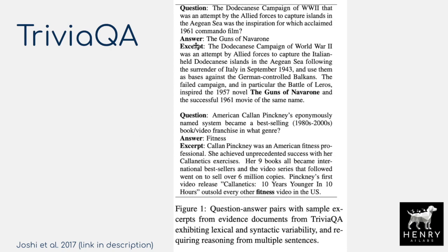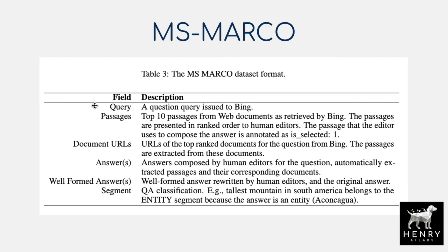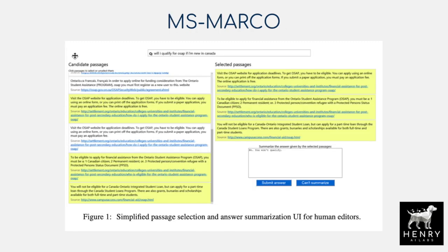In the TriviaQA dataset, you similarly have questions requiring knowledge-intensive factual information to generate answers. The MS-MARCO dataset is particularly interesting — it has queries issued to Bing written in natural language, with the top 10 passages returned and human-annotated best answers. This represents another knowledge-intensive task: answering any search engine query using this Wikipedia corpus non-parametric memory, the neural information retrieval system, and the BART text output generator, rather than classifying an answer within a passage span.